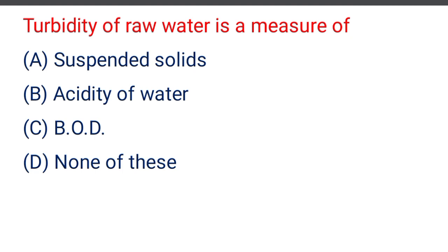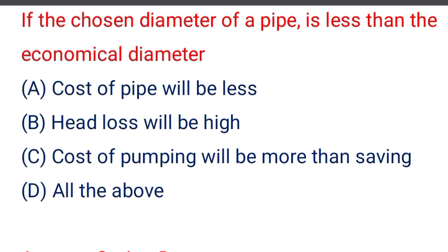Next question: turbidity of raw water is measured by — option A suspended solids, option B acidity of water, option C BOD, option D none of the above. The correct answer is option A, suspended solids.